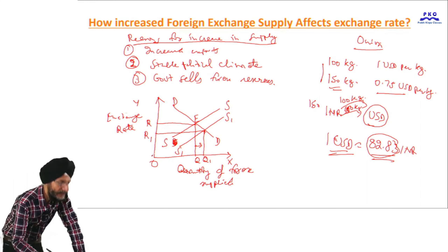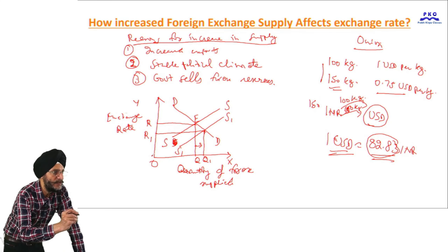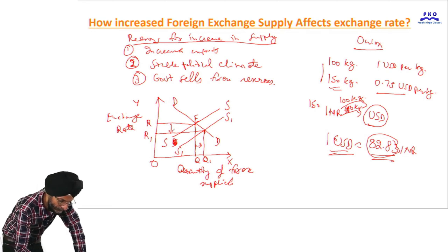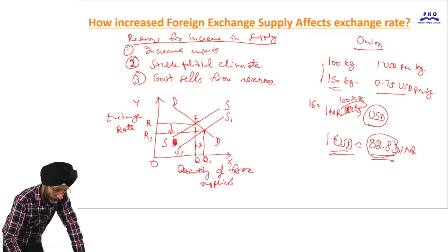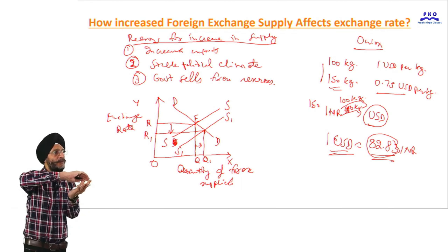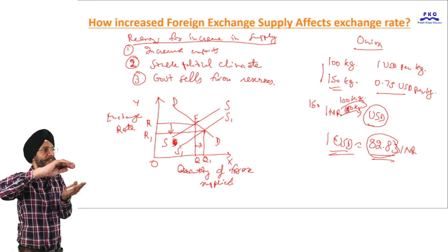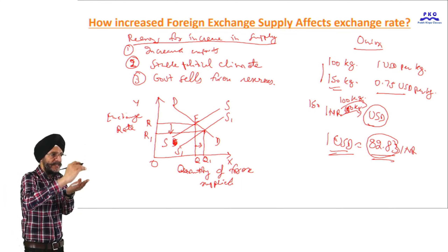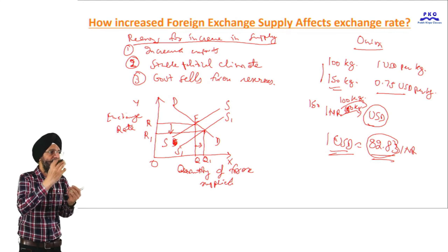The earlier exchange rate was OR. Now it has decreased to OR1. The supply of foreign exchange has increased and the exchange rate has decreased.